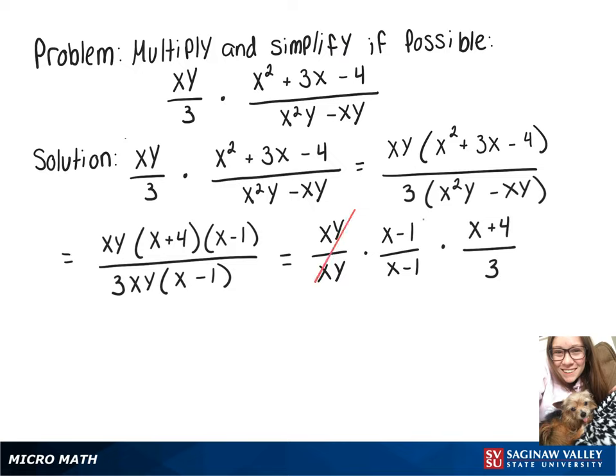Now these parts will go away because they're equal to 1 and that leaves us with x plus 4 over 3.